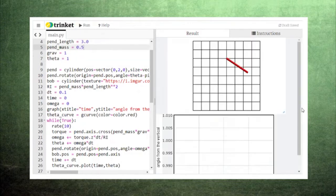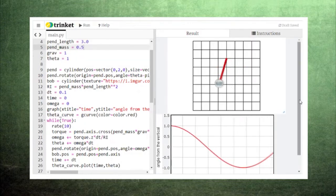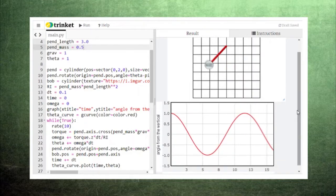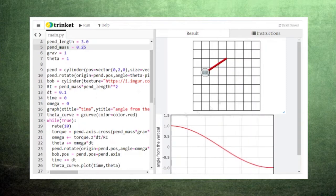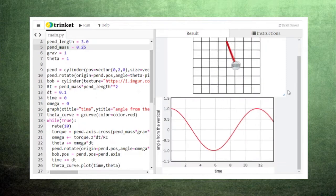There are lots of variables you can change in this code, for example the mass of the pendulum. As you might have come to suspect by now, the mass cancels between the force of gravity and the rotational inertia, so the pendulum oscillations look exactly the same when you change the mass.